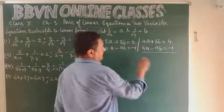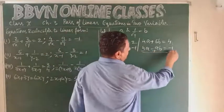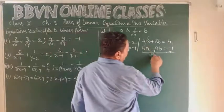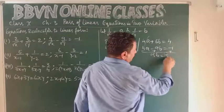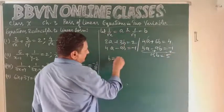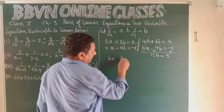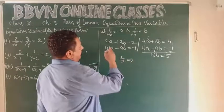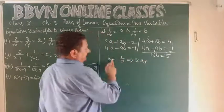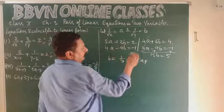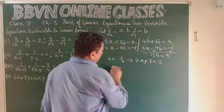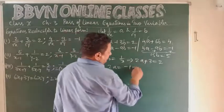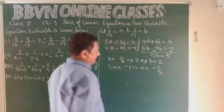Subtract the second equation from the first. The 4a terms cancel. 6b - (-9b) = 15b, and 4 - (-1) = 5. So 15b = 5, which gives b = 1/3. Substituting b = 1/3 into the first equation: 2a + 3×(1/3) = 2, so 2a + 1 = 2, giving 2a = 1... wait, 2a = -1, so a = -1/2.